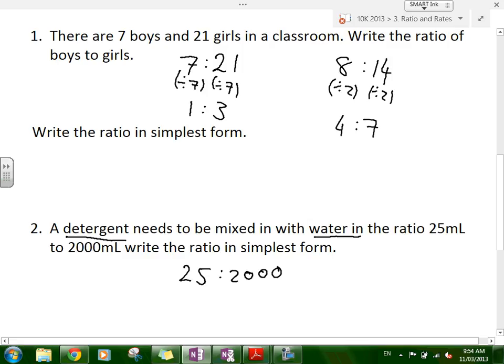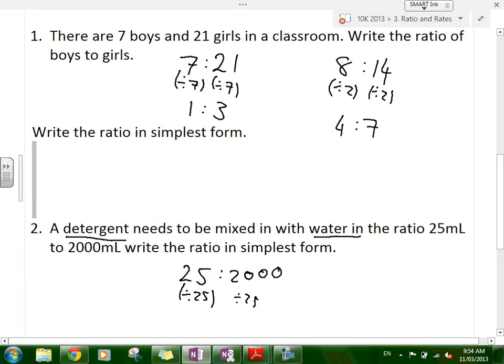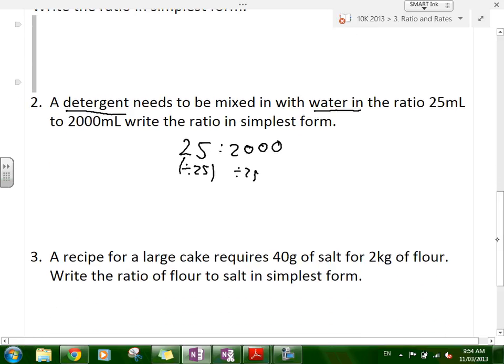What's the common factor here? 5 is a common factor. What's the highest? 25. What's 2,000 divided by 25? So it's 80. So if we divide those sides by 25, we get 1 to 80. You don't need to write the units because it's assumed that the units are the same. They have to be the same for this to work. So we do 1 to 80. So what this is saying, for every one part of detergent, you have 80 parts of water.